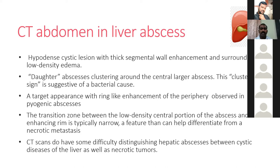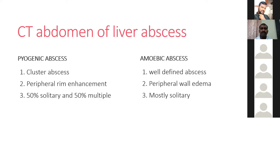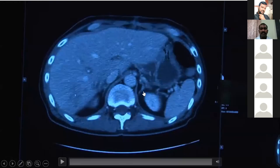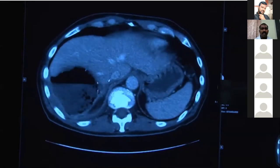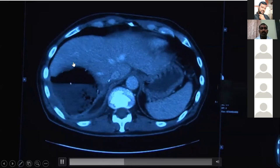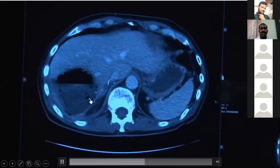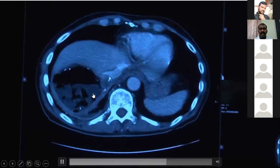CT can have difficulty distinguishing hepatic abscess from cystic liver disease or necrotic tumor; in those situations MRI is used. On CT, pyogenic liver abscess shows a cluster abscess with peripheral rim enhancement and is often multiple, whereas amoebic liver abscess shows a well-defined abscess with peripheral wall edema and is mostly solitary. In the CT video you can see the cluster sign with an air-fluid level and gas inside the abscess cavity, consistent with pyogenic liver abscess.